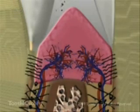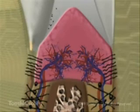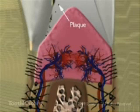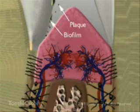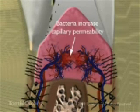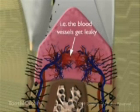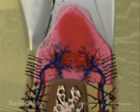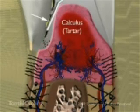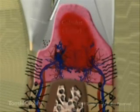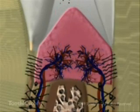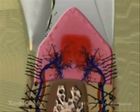During meals, food debris accumulates in the sulcus. When mixed with mouth bacteria and proteins from saliva, plaque and less obvious biofilm are formed. Both are harmful to teeth and periodontal structures. Left in place on the teeth, bacterial plaque and biofilm begin to mineralize, forming hardened deposits called calculus, which can only be removed with dental instruments.